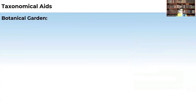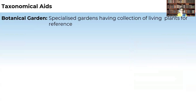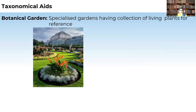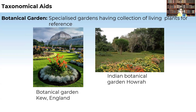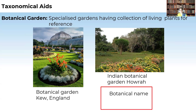Another taxonomical aid is botanical garden. These are specialized gardens which have a collection of living plants for reference. There are many botanical gardens we can visit. One of the important botanical gardens is in Howrah. These botanical gardens help us to study a variety of plants not found in our local area, and we can know the name, family, and characters of the plants.